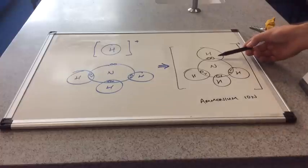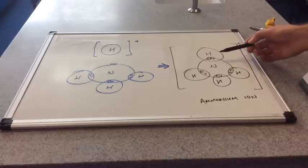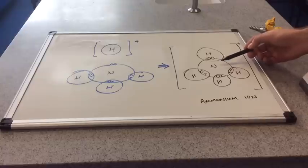So this is the new type of covalent bond. It's a coordinate bond or a dative covalent bond because the shared pair of electrons have come from the same atom.